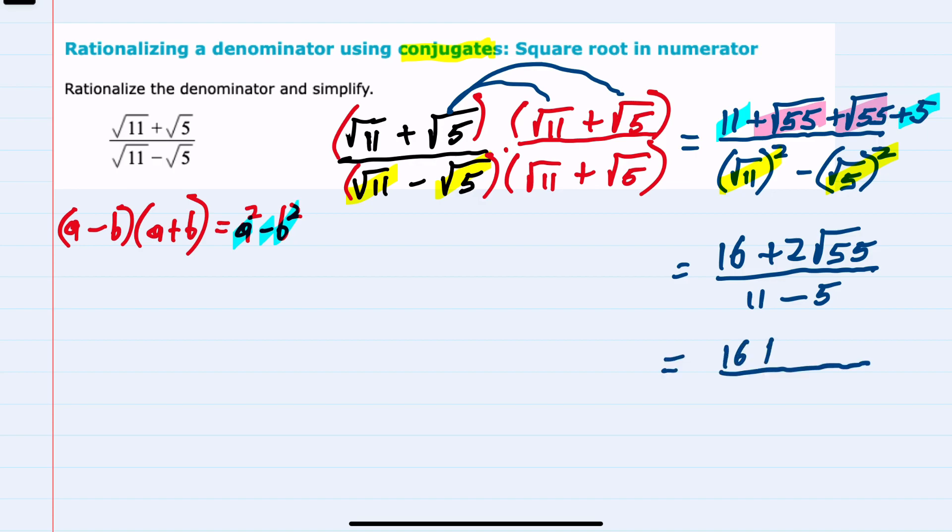And then simplifying that denominator, 11 minus 5 would just be 6. Lastly, I should check to see if anything will cancel. And since both terms in the numerator and the denominator are all divisible by 2, I know that some canceling is possible.